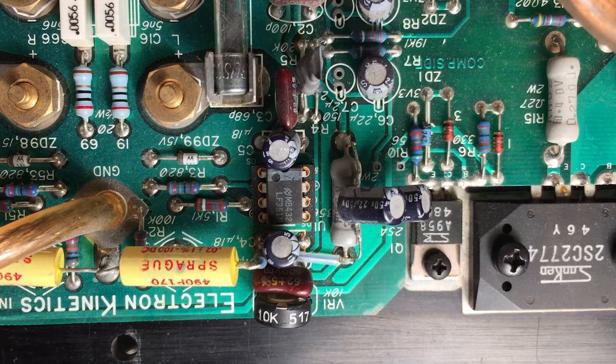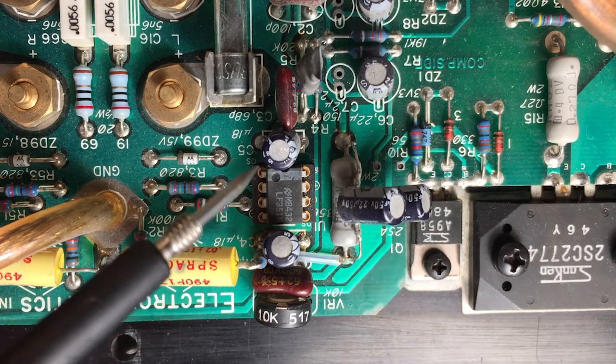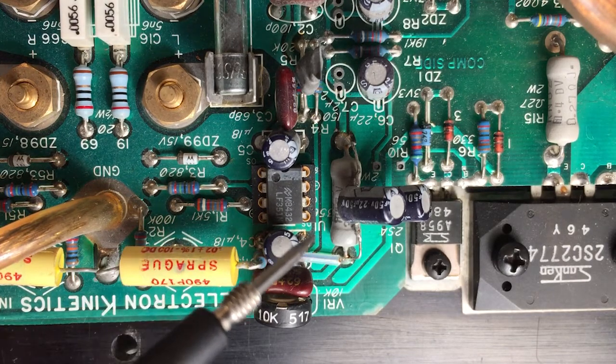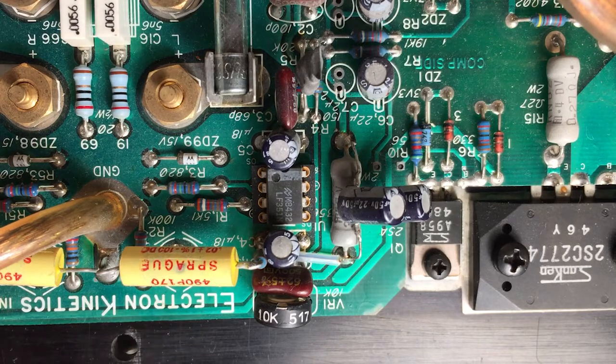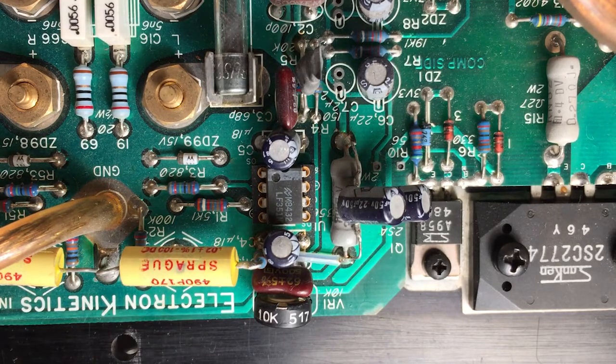So a real op-amp, one from the 1980s, looks like this little box right here, this gray box. It has eight legs on it. This is called an LF351 op-amp. It was made by National Semiconductor, which is now part of Texas Instruments.